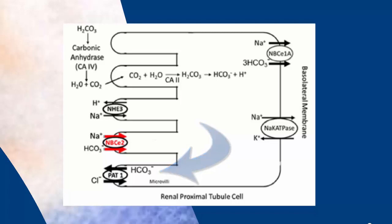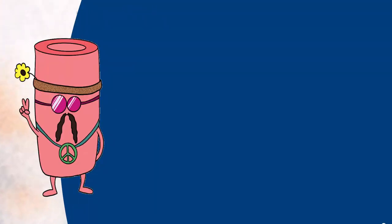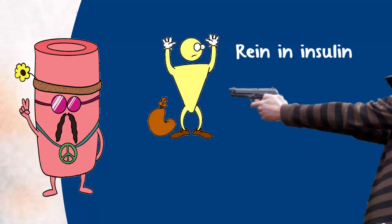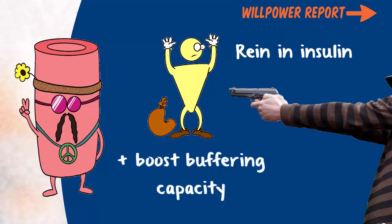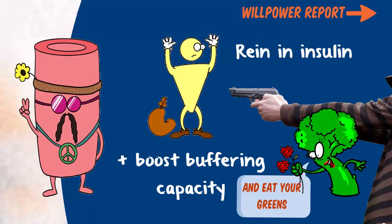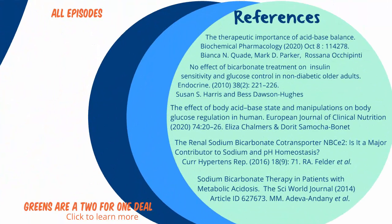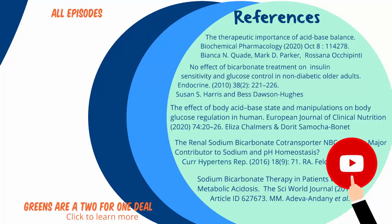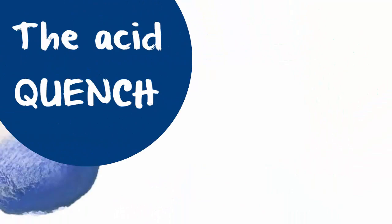So how do you clean up your act and address your mild acidosis? The best strategy is to deal with the root of the problem: rein in insulin. For ideas on where to start, download the willpower report — it's free. And go ahead and boost your buffering capacity by eating those green vegetables. Mild metabolic acidosis is just one of hundreds of things in the body that are amiss when you're insulin resistant. Subscribe to our channel to learn more in our ups and downs of insulin resistance series. Thank you so much for watching.